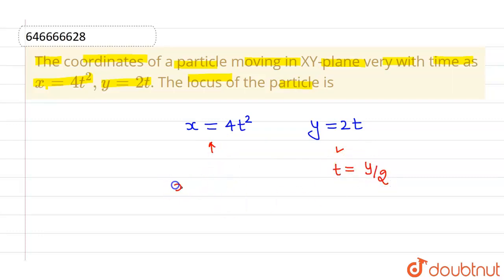So if I put here, x becomes 4 times (y/2) whole square. This comes out to be x = 4y²/4, which means y² = x.